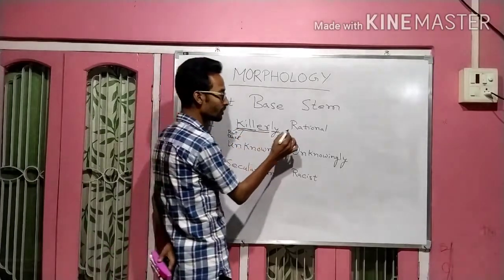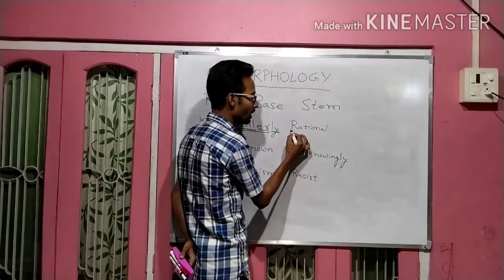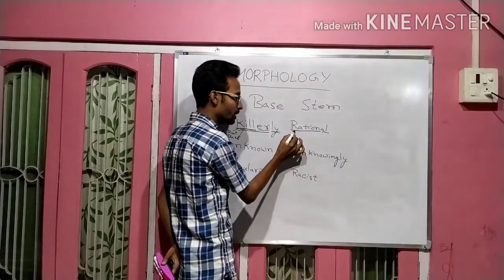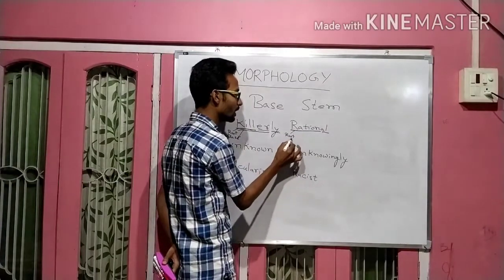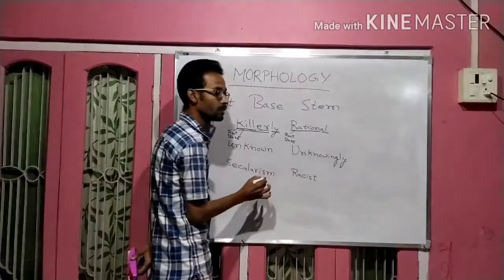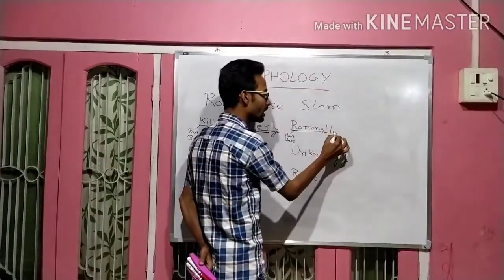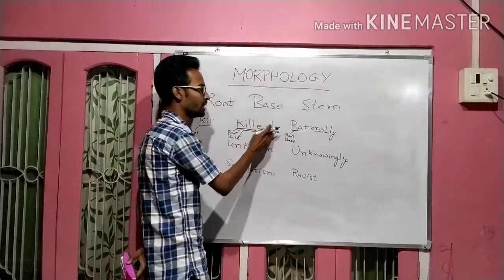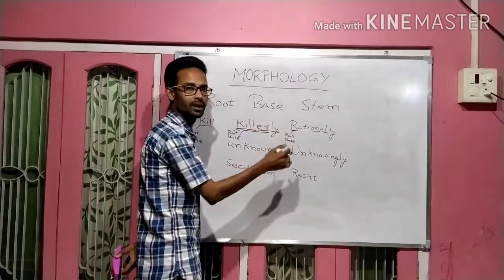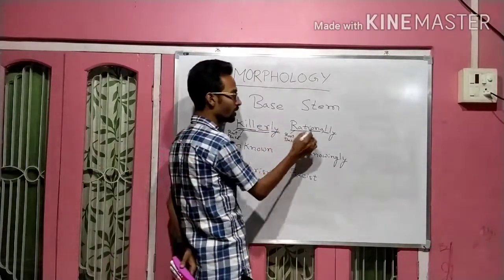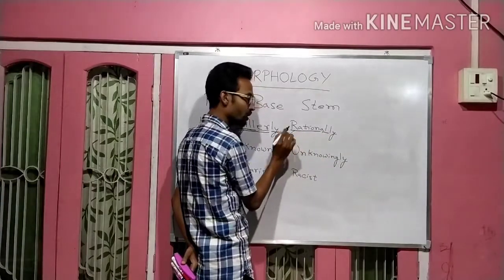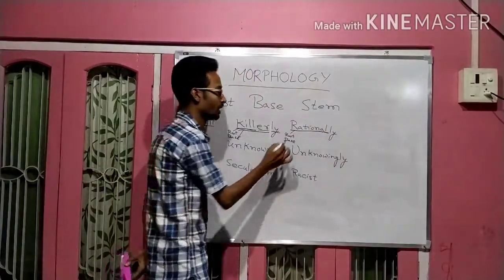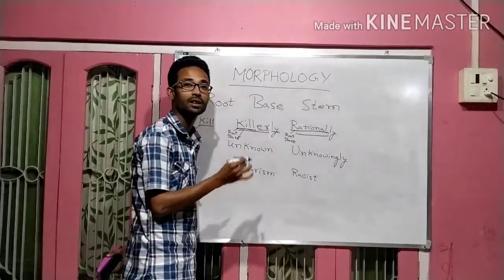Similarly, take 'rational.' Here, ration is the root and ration is the base. But if we add 'ly' — you can add any morpheme — when we add 'ly' here, ration remains the root and the base gets transformed to 'rationale.' The whole 'rationale' is considered as the base.